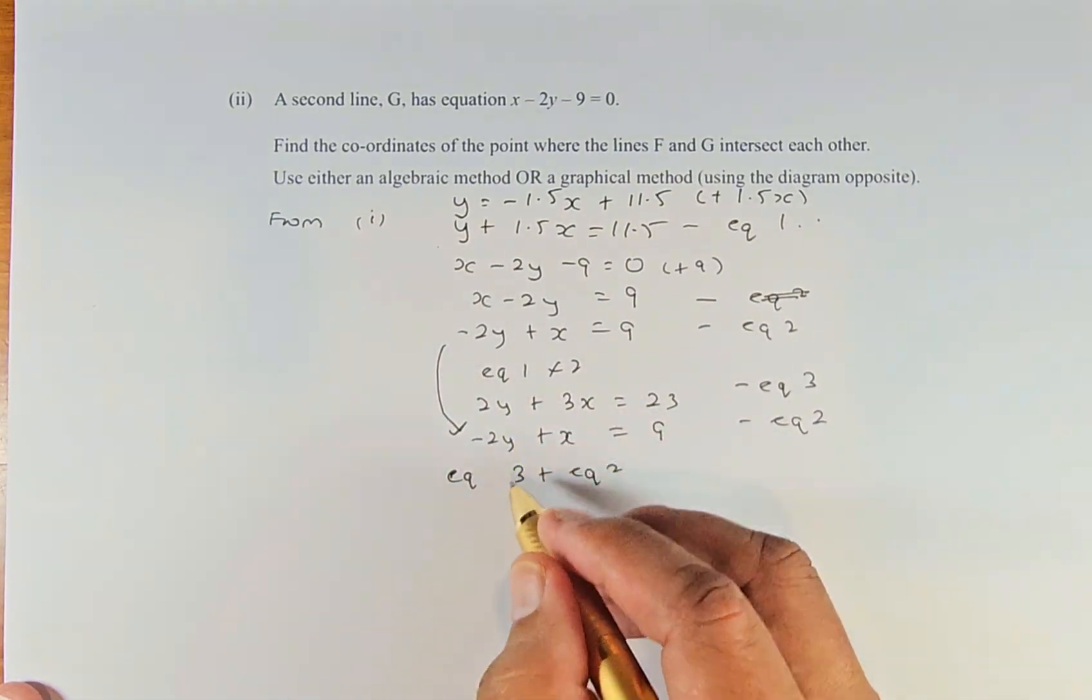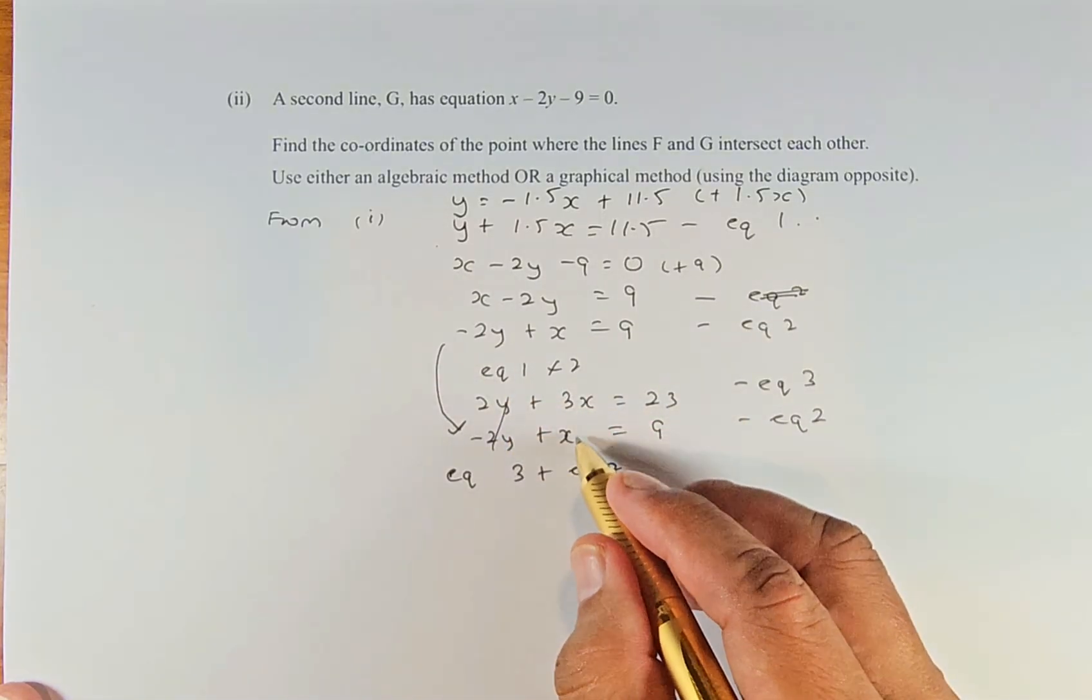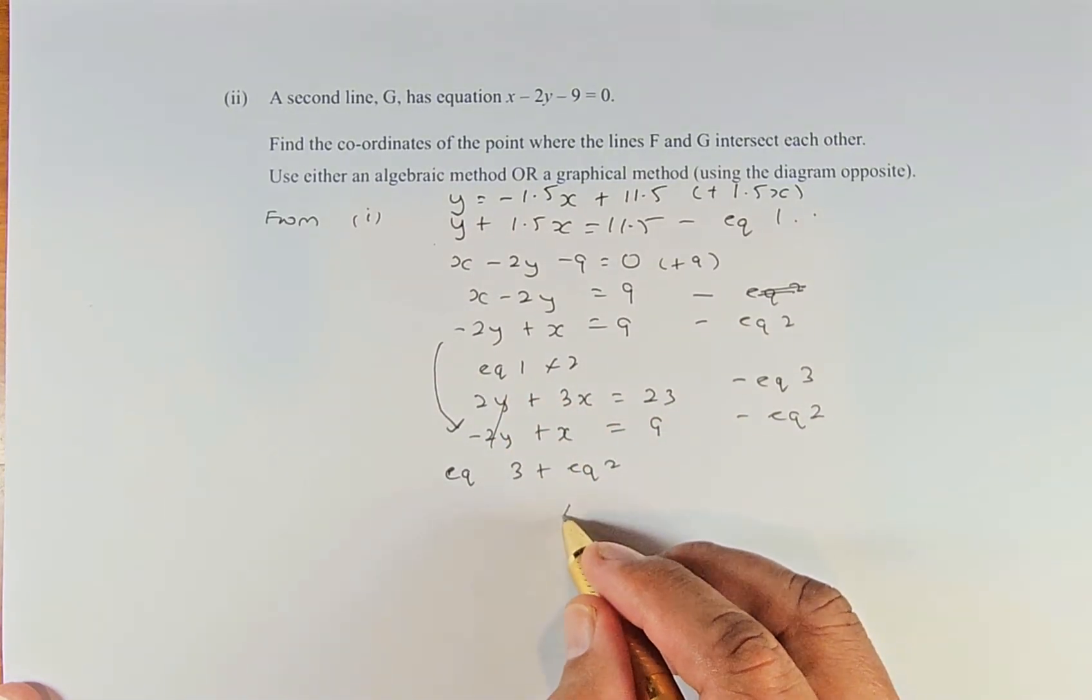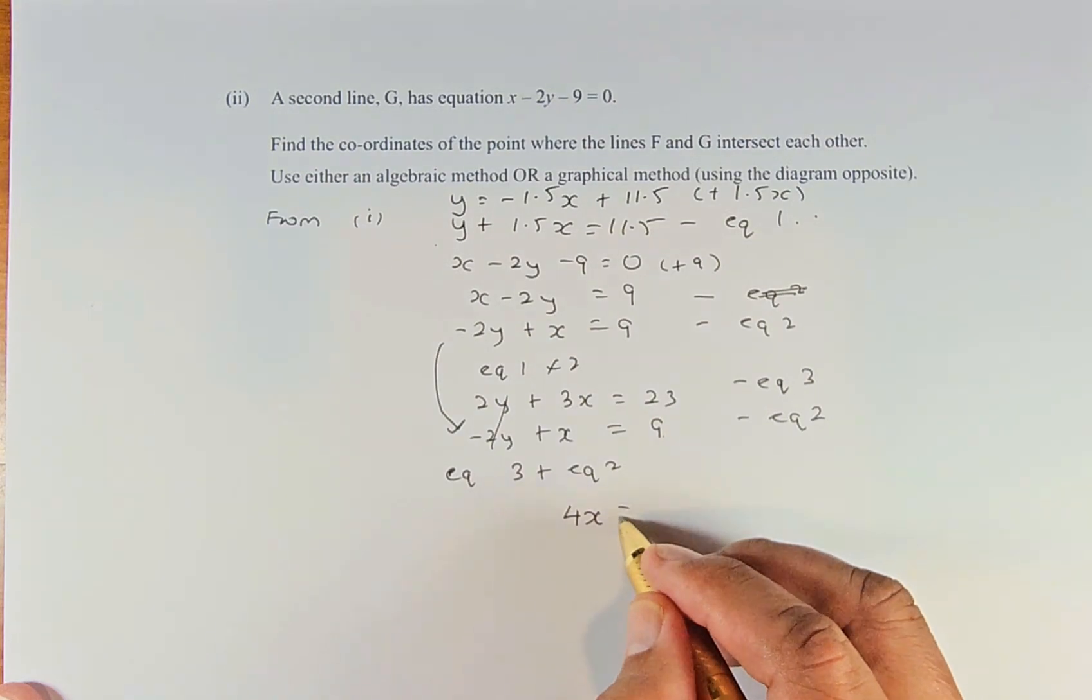2y plus -2y becomes 0—they eliminate. 3x plus x equals 4x. And 23 plus 9 equals 32.